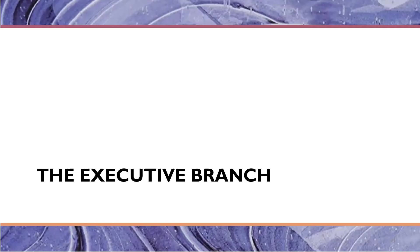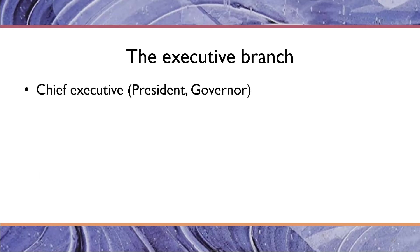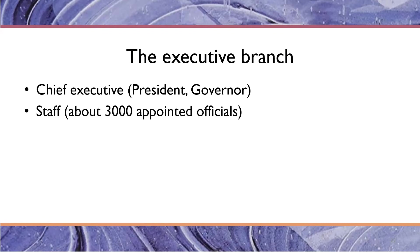Let's delve into the role of the executive branch in the policy process. What do we mean by the executive branch? We mean the chief executive of a government like the president or the governor in the American system. In the United States, we have a pretty clear separation of branches between the legislative, executive, and judicial, and so the president, or the governor, is the head of the executive branch in the federal government and in the states. At the federal level, we also have the staff that are the political appointees.